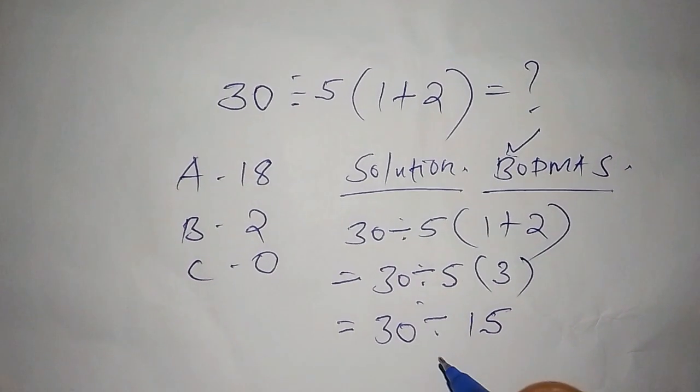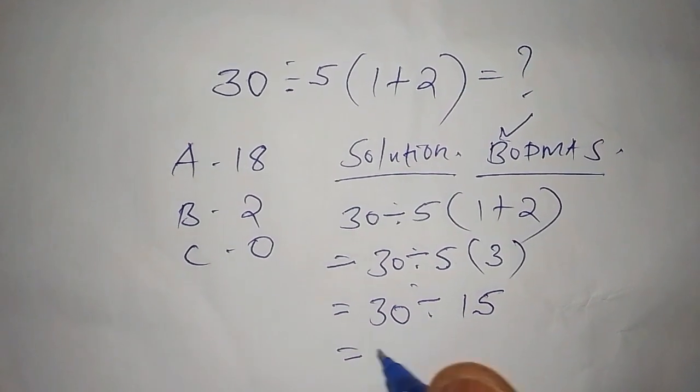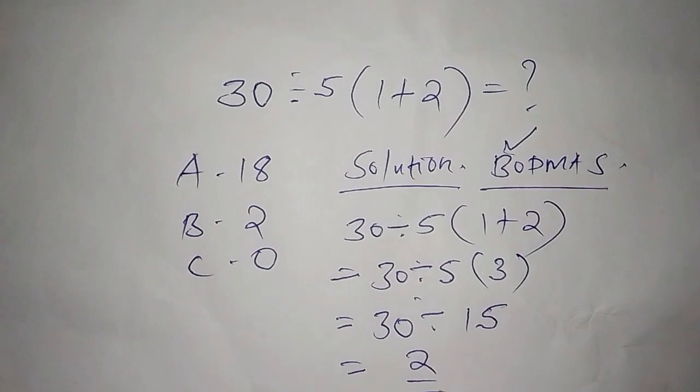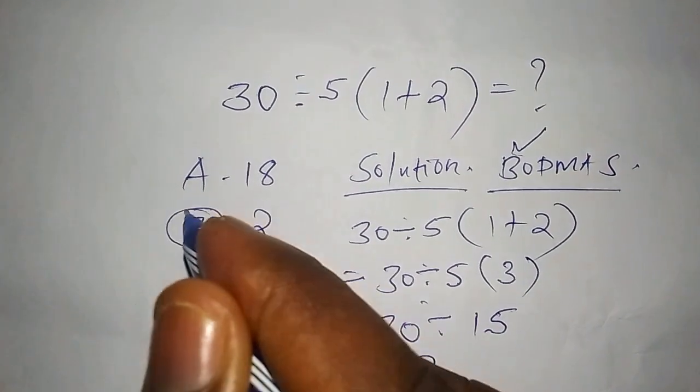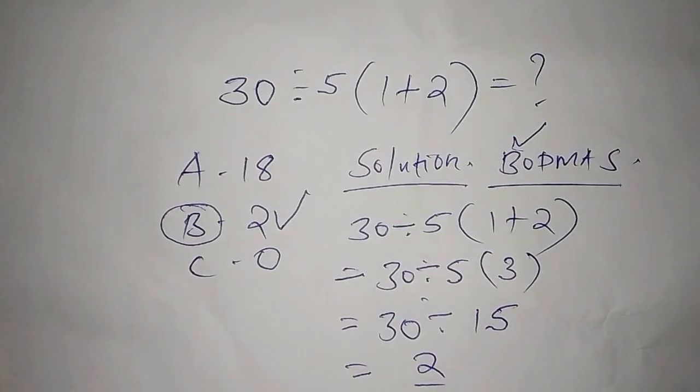Then from there we shall have 30 divided by 15, and the answer is 2. So the correct answer here is b, 2. Thank you.